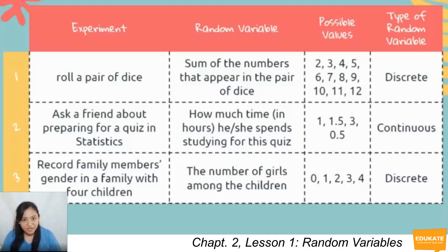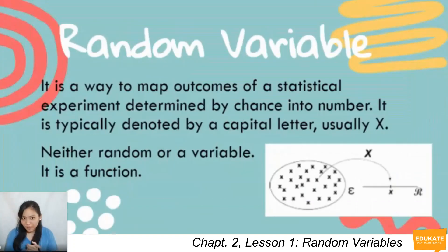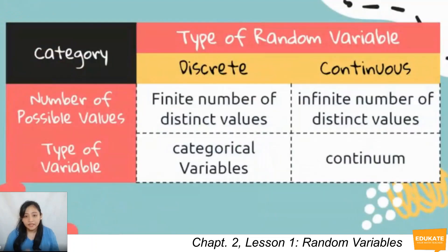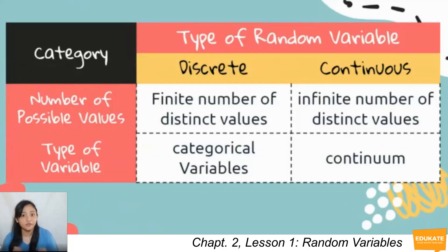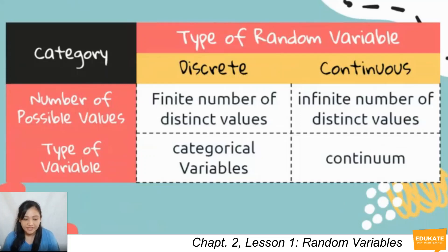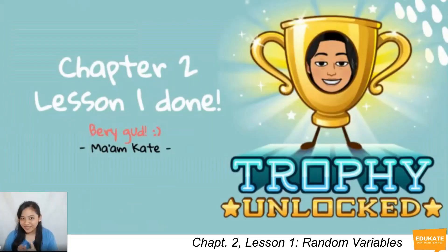There are more examples in your module. You can try to write down the experiment, random variables, possible values, and the type of random variable. Wrapping up: a random variable is not random and not a variable — it is a function. The types are discrete and continuous. Discrete means finite, while continuous means infinite. Discrete variables are categorical, while continuous variables lie on a continuum such as intervals. That is it for Lesson 1 under Chapter 2.